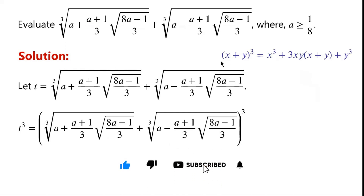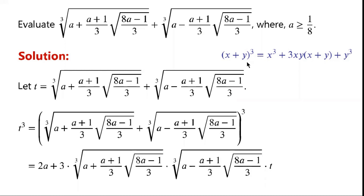x plus y all cubed can be written as x cubed plus 3xy times (x plus y) plus y cubed. Now we apply this binomial extension. x cubed plus y cubed equals the first term cubed plus the second term cubed. This term and this term cancel.